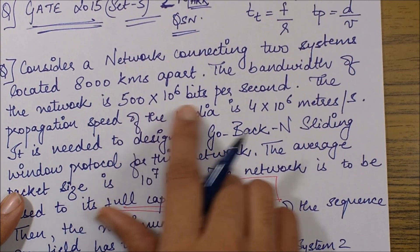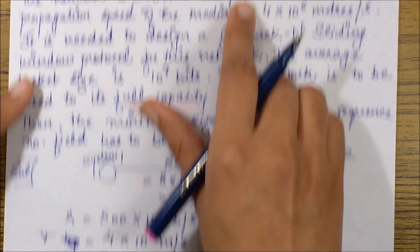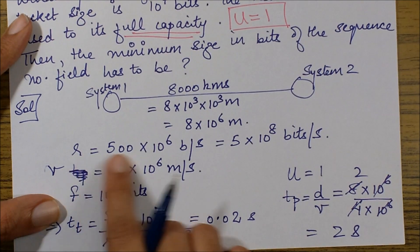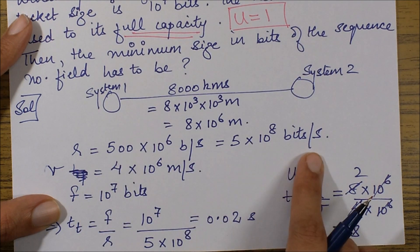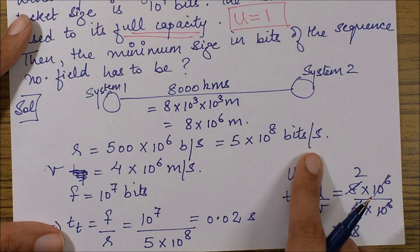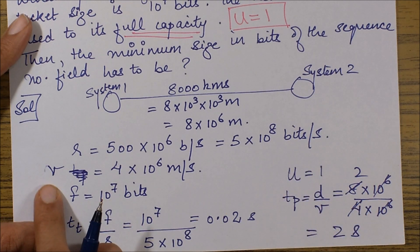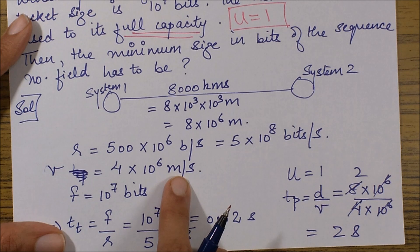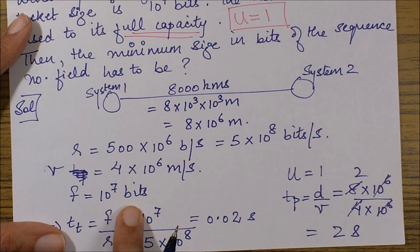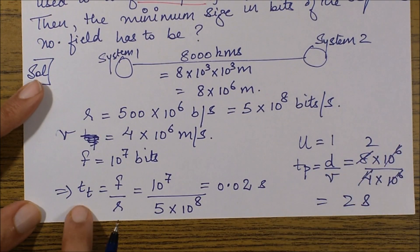R was given to us as 500 × 10^6 bits per second, so I've written R = 5 × 10^8 bits per second. Then, v was given to us as 4 × 10^6 meters per second, and f was given to us as 10^7 bits. That means we can easily find tt, which is the transmission time, and tt = f / R.